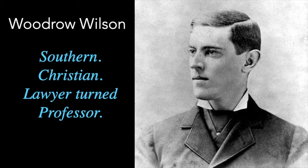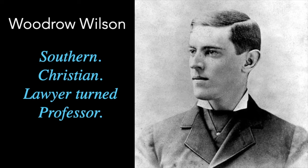Woodrow Wilson was born in Virginia in 1856 — a very young boy when the Civil War was going on — and he grew up in the South during the Reconstruction era. His experiences growing up there played a very important role in the formation of some of his ideas, especially regarding race. His family also spent time in South Carolina and Georgia. His father was a minister, and Wilson came from a long line of ministers, so his Christian faith became an important aspect of his personality and the way he approached problems.